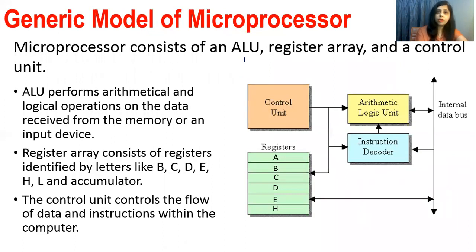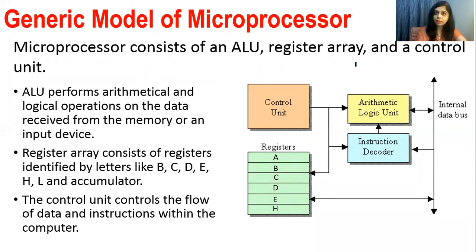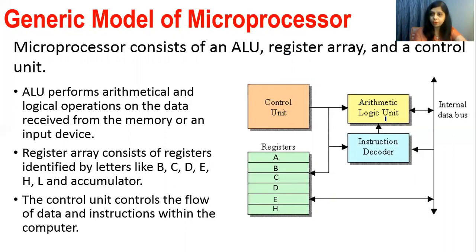Now, the generic model of a microprocessor. A microprocessor consists of an ALU (Arithmetic and Logical Unit), a register array, and a control unit. This is a general diagram — it is not specific to one microprocessor. Any microprocessor you take will have all these blocks. The ALU performs arithmetic and logical operations.